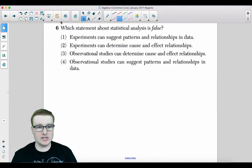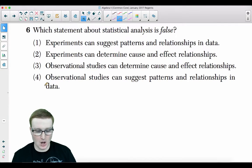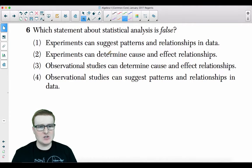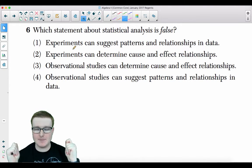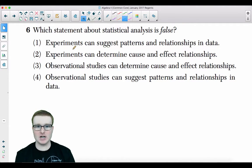Number 6. Which statement about statistical analysis is false? Experiments can suggest patterns and relationships in data. Experiments can determine cause and effect relationships. Observational studies can determine cause and effect relationships. Or observational studies can suggest patterns and relationships in data. Experiments could be controlled. An experiment, you are setting up a hypothesis and you're testing the variables. You are clearly suggesting patterns if you are having an experiment. So that is actually true.